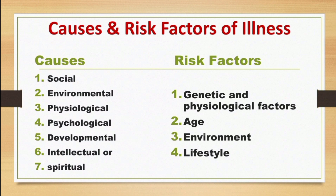Now, risk factors of illness include genetic and physiological factors, age, environment, and lifestyle. In genetic factors, examples include diabetes mellitus, heart disease, kidney disease, and mental illness. Physiological risk factors relate to physical conditions such as being overweight, which places stress on the circulatory system.